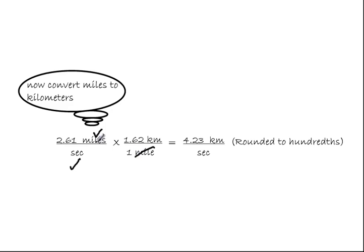So obviously when I multiply these two fractions, the miles are gone, and I'm left with kilometers. Seconds are the only units left in the denominator. And if I take 2.61 and multiply it by 1.62, I get 4.23 kilometers per second.